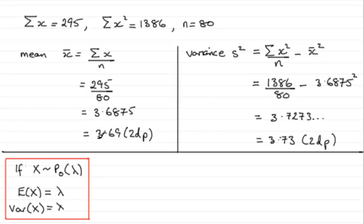So we've just worked out the mean and the variance, and when we look at the two results here, we notice that they're not exactly equal, but there's not much difference really between them. If we had them to one decimal place, they'd both be 3.7.